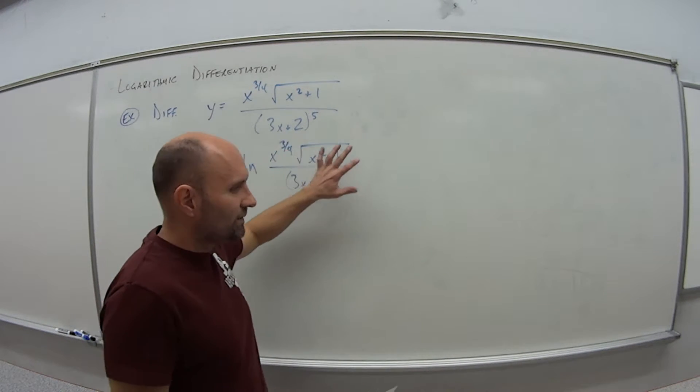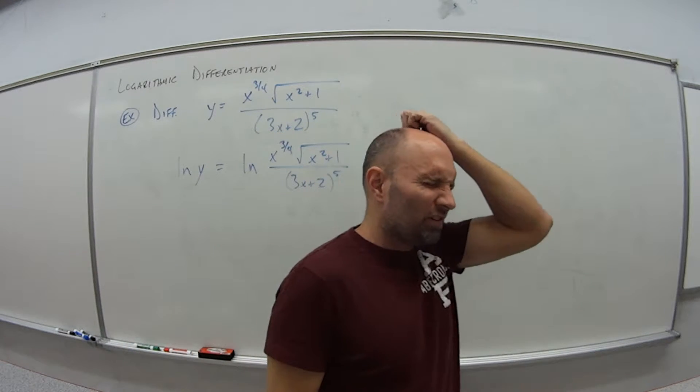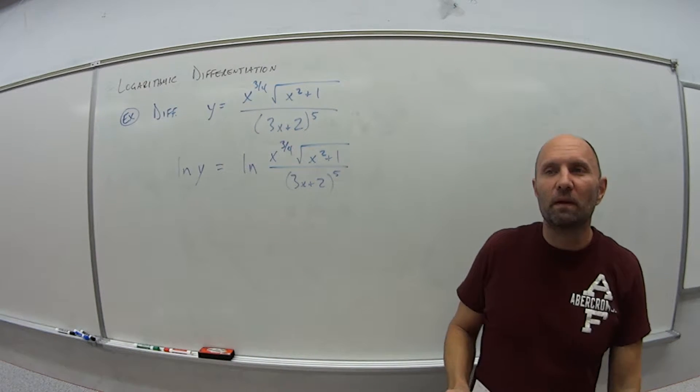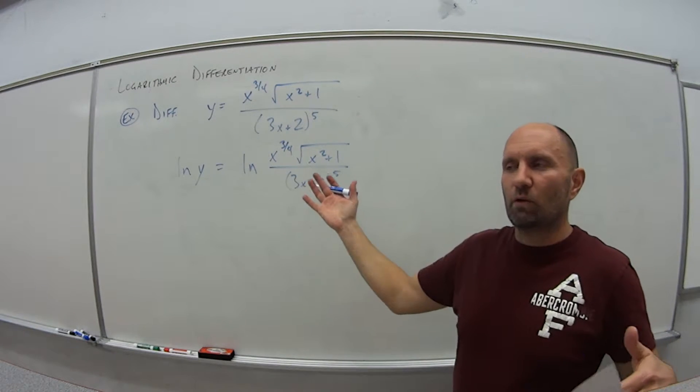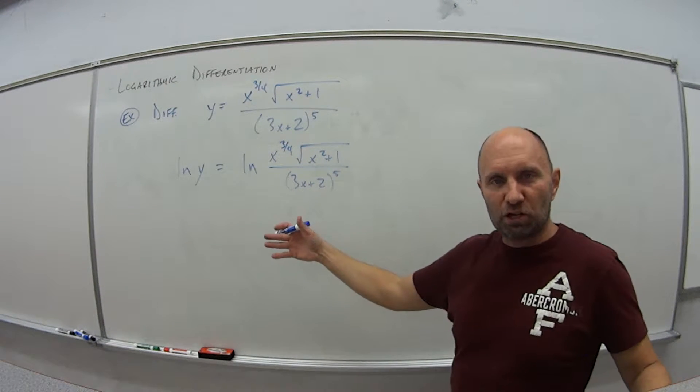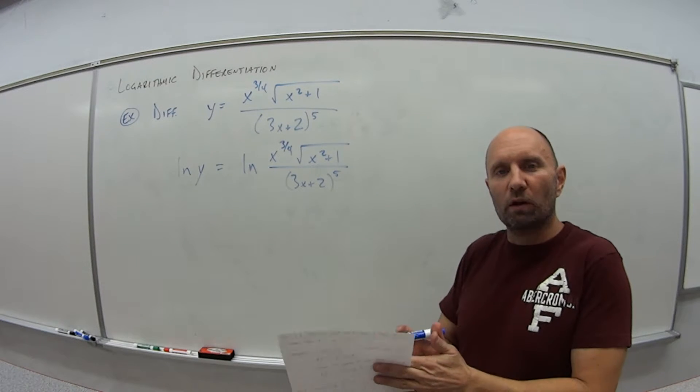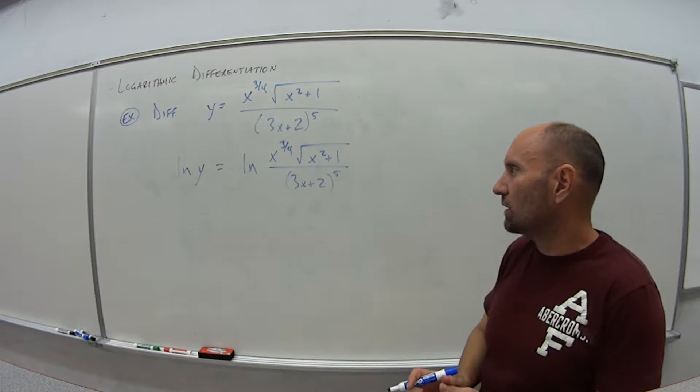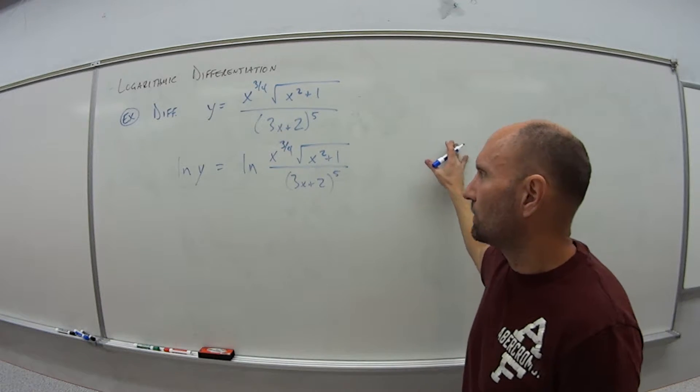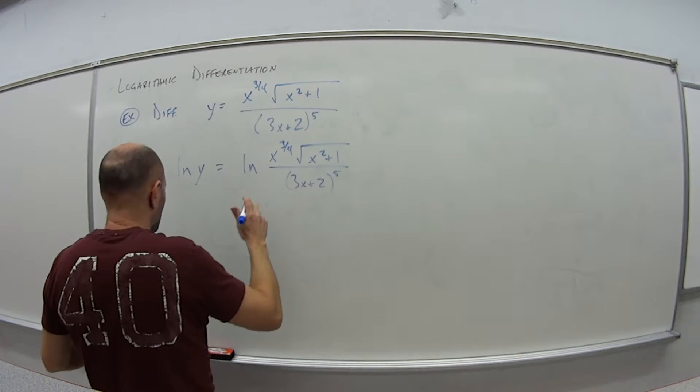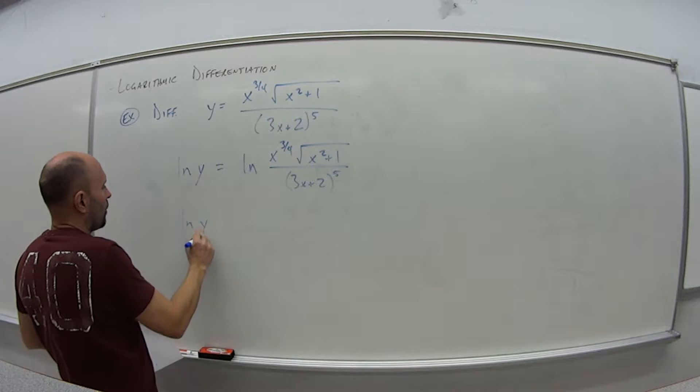So this right side, if you remember in section 3.2, we did that example where we had a really messy expression and we wrote it into one log expression. We're going to do the opposite here. We're going to break this thing apart. So what do we have? We have natural log of y.